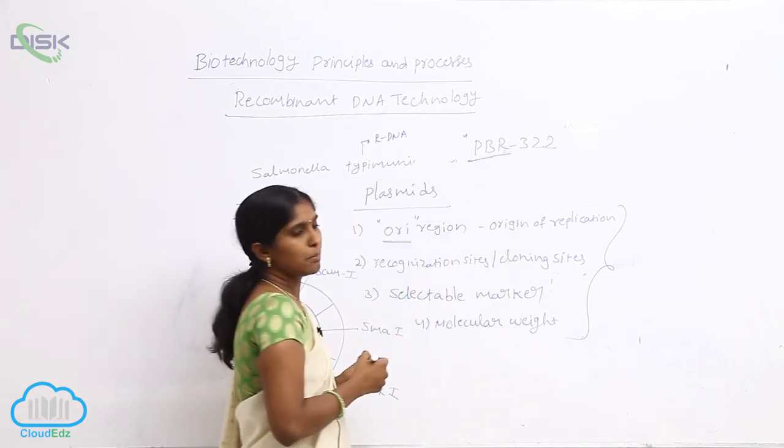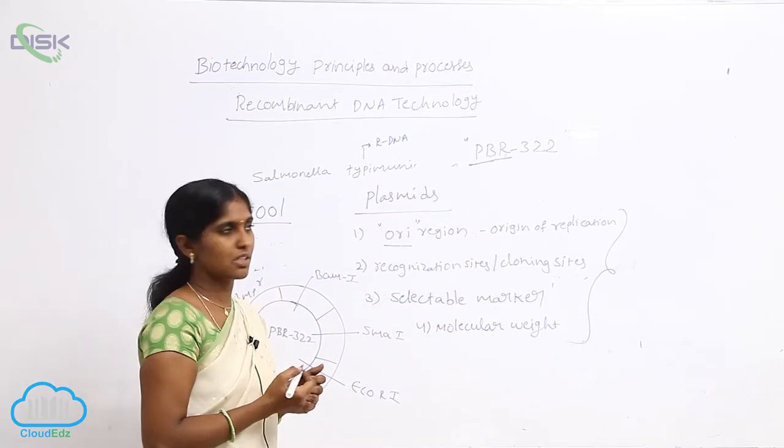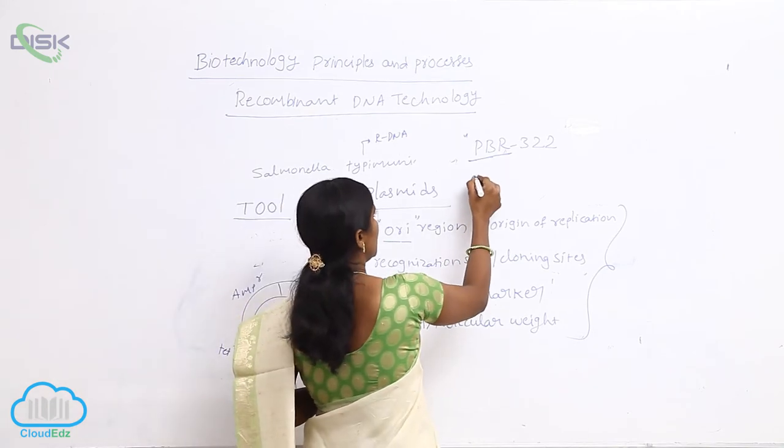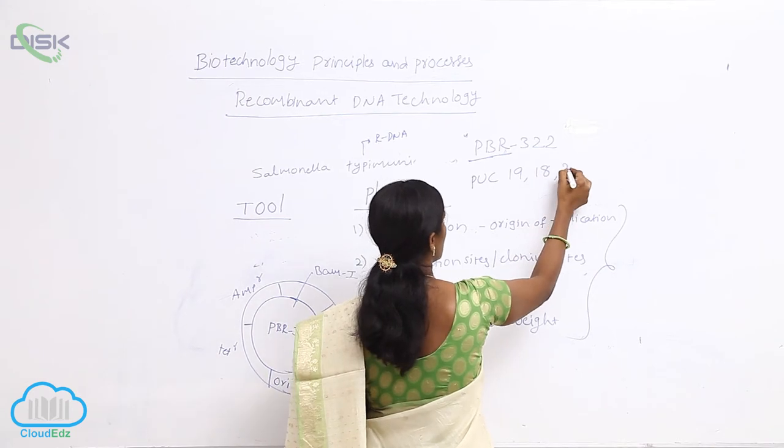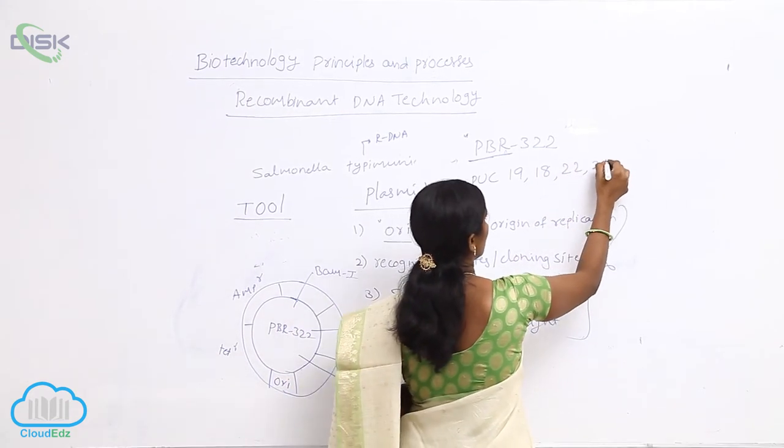And PUC19, PUC18, PUC22, PUC24 - these are also plasmids.